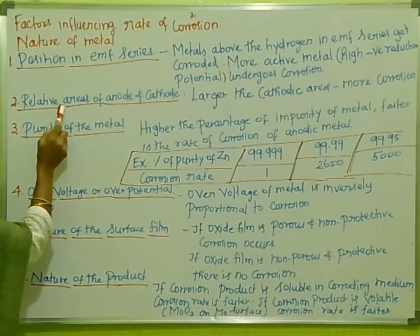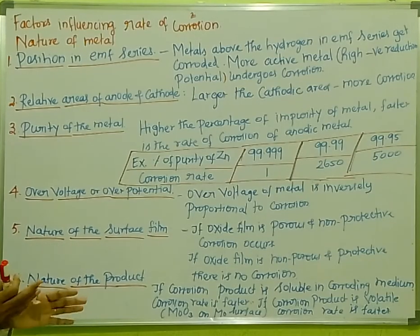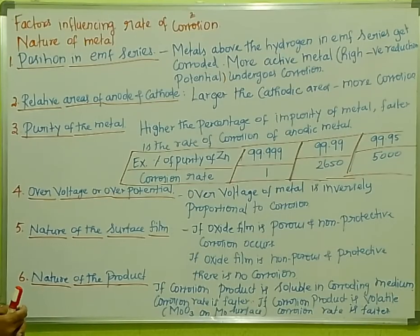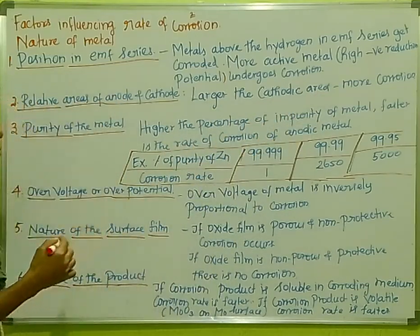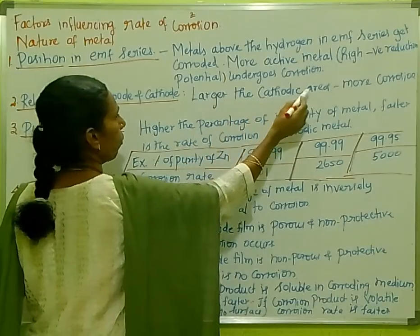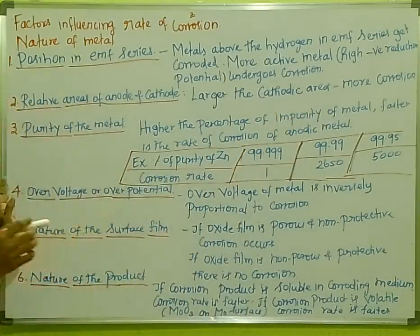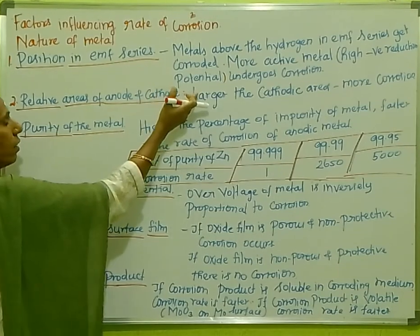Another factor is the relative areas of the anode and cathode. The anodic and cathodic areas are related to differential area corrosion, as seen in the last video. If the cathodic area is larger than the anodic area, the rate of corrosion is greater, because more electrons flow from the anode. A larger cathodic area means more corrosion of the anodic metal.